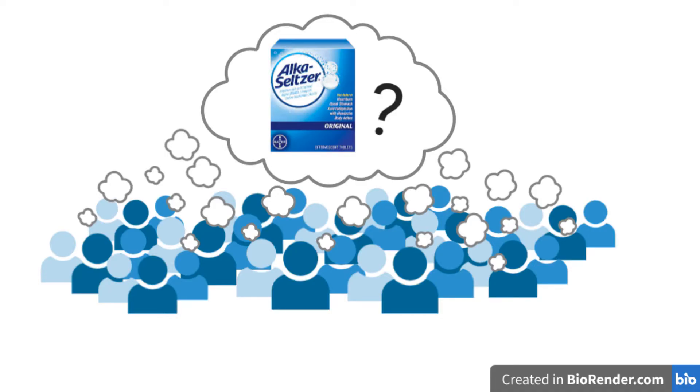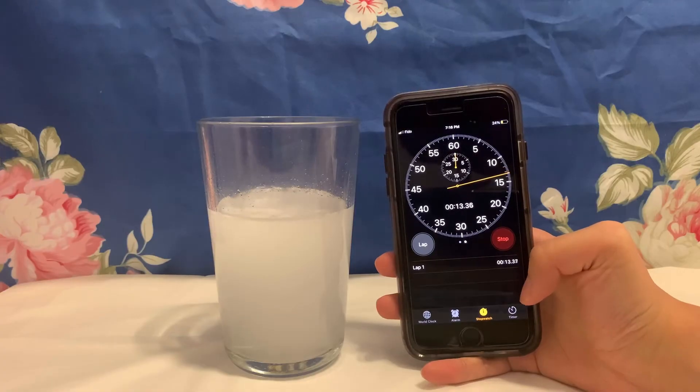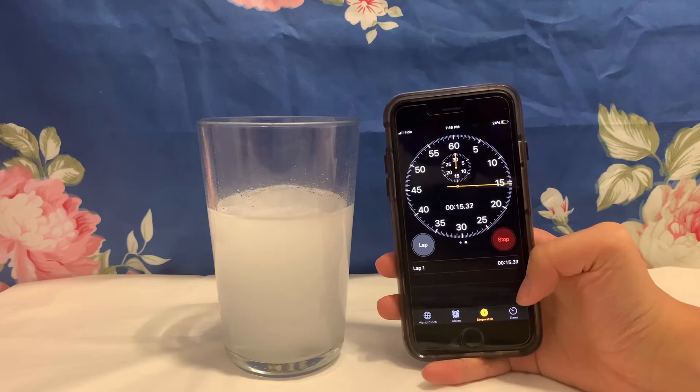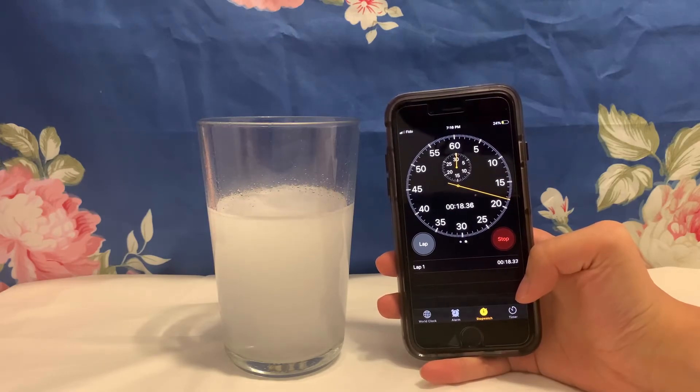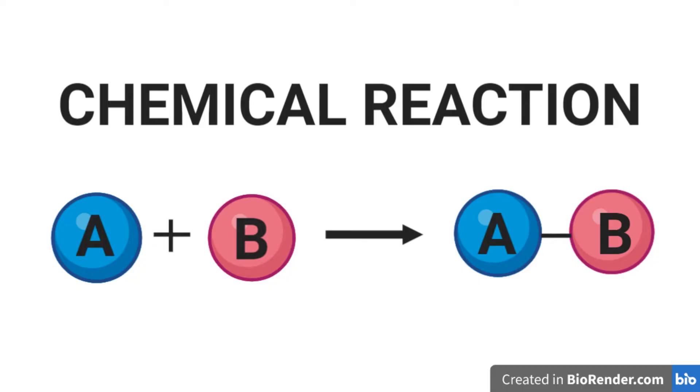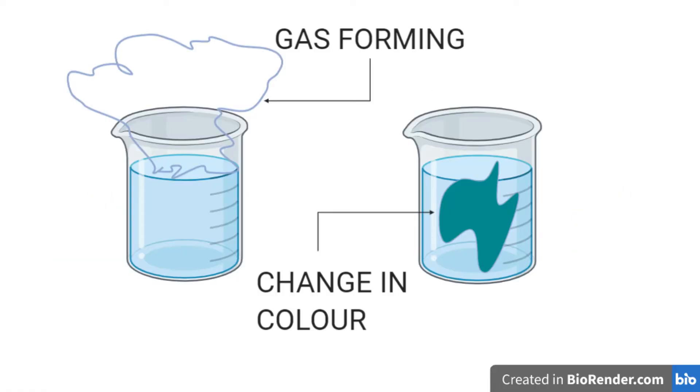Before we go any further, we need to know how an Alka-Seltzer tablet actually works. When an Alka-Seltzer tablet is placed in water, it starts to dissolve and form bubbles. This is called a chemical reaction. A chemical reaction is a process by which one or more substances are rearranged to form different substances. In order for a chemical reaction to occur, particles must collide with enough energy. Some examples of signals that a chemical reaction took place are gases forming or change in color.